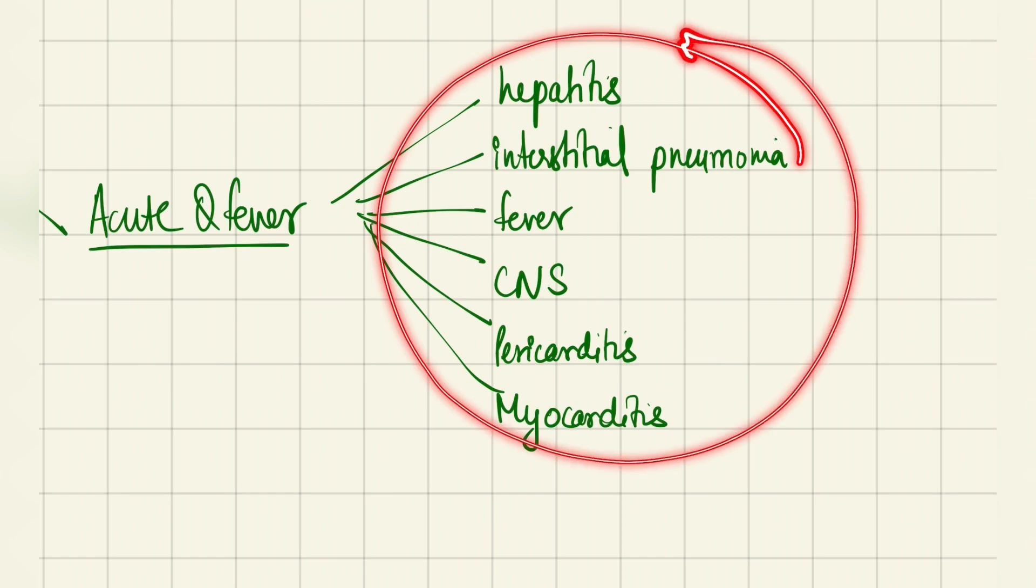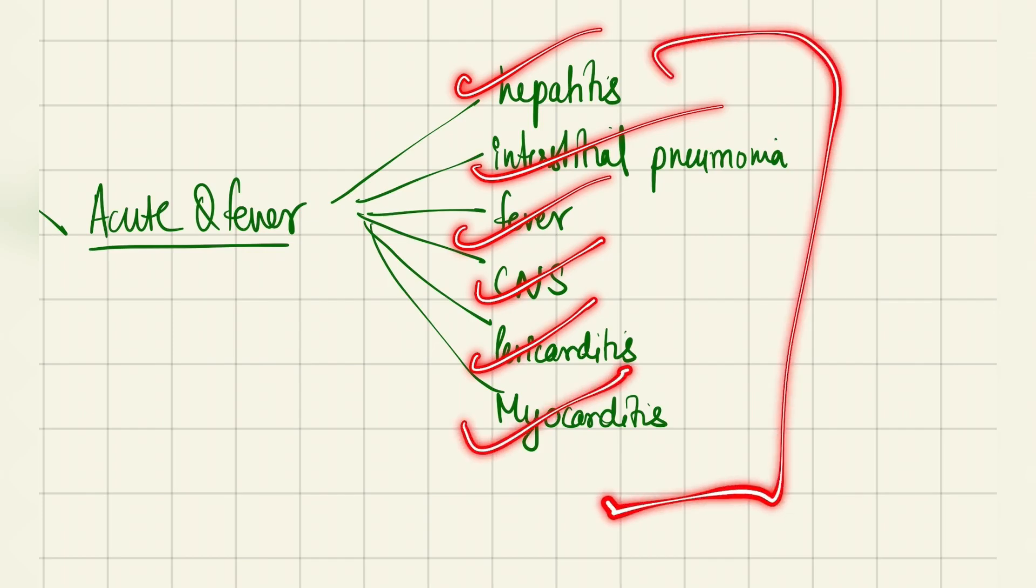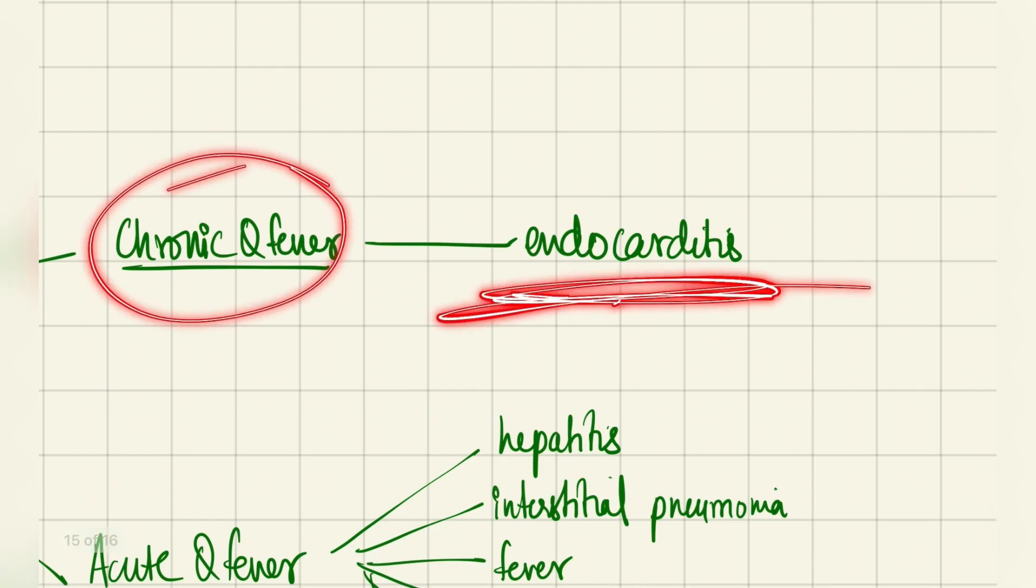All those wild diseases here—hepatitis, pneumonia, fever, CNS, pericarditis, myocarditis—are covering a lot of organ systems. In acute Q fever, but in chronic Q fever, just endocarditis.